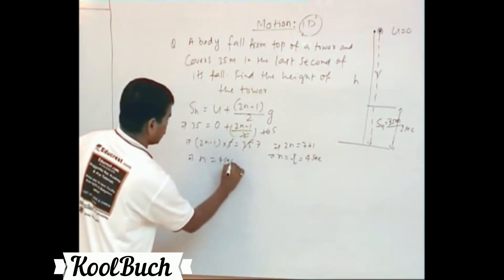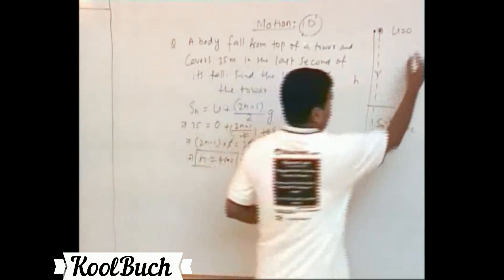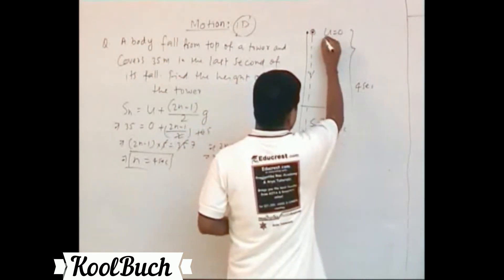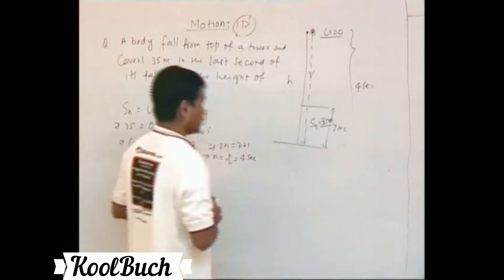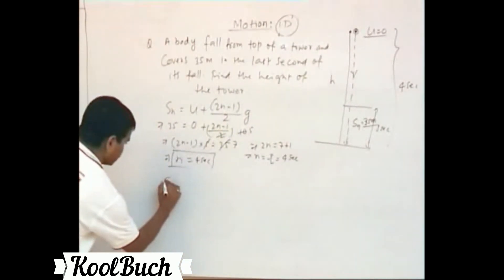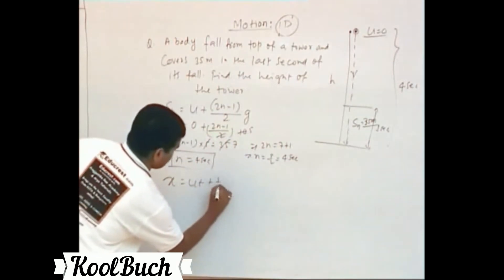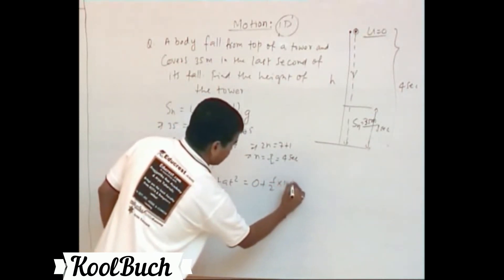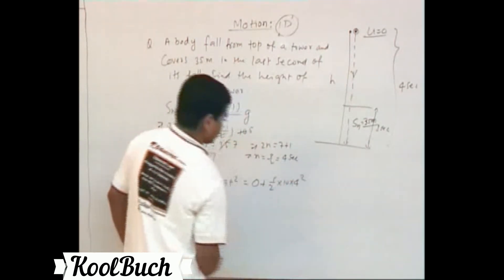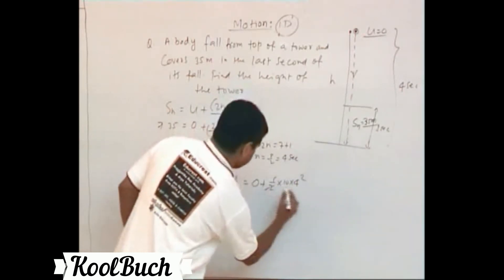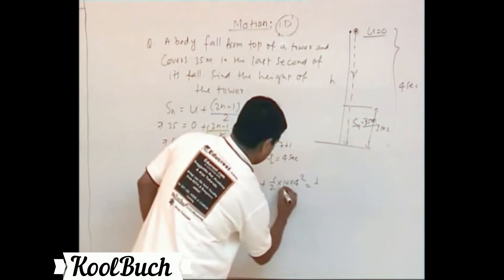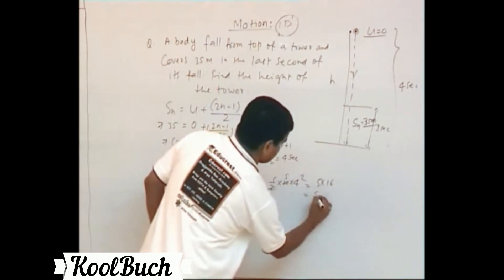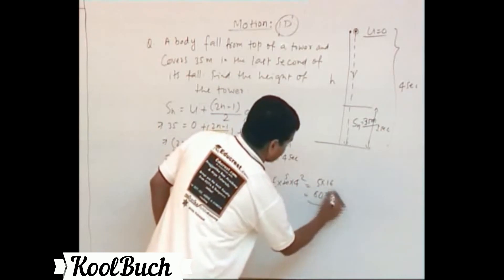n equals 4 seconds means it takes 4 seconds for the object to fall from the top of the tower to the ground. Since initial velocity is 0, we use x equals ut plus half at squared. With u equals 0, a equals 10, and t equals 4 seconds: x equals half times 10 times 16 equals 80 meters. So the height of the tower is 80 meters.